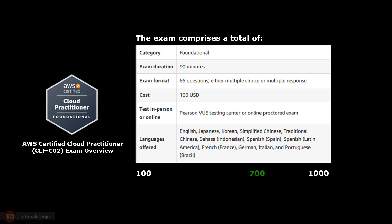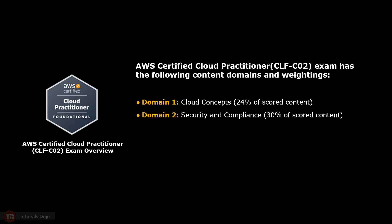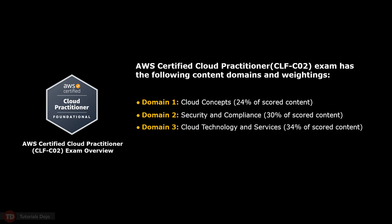AWS uses a scaled scoring method to equate scores across multiple exam types that may have different difficulty levels. The new version of the AWS Certified Cloud Practitioner exam has the following content domains and weightings: Domain 1, Cloud Concepts, 24% of scored content; Domain 2, Security and Compliance, 30% of scored content; Domain 3, Cloud Technology and Services, 34% of scored content; and Domain 4, Billing, Pricing and Support, 12% of scored content.